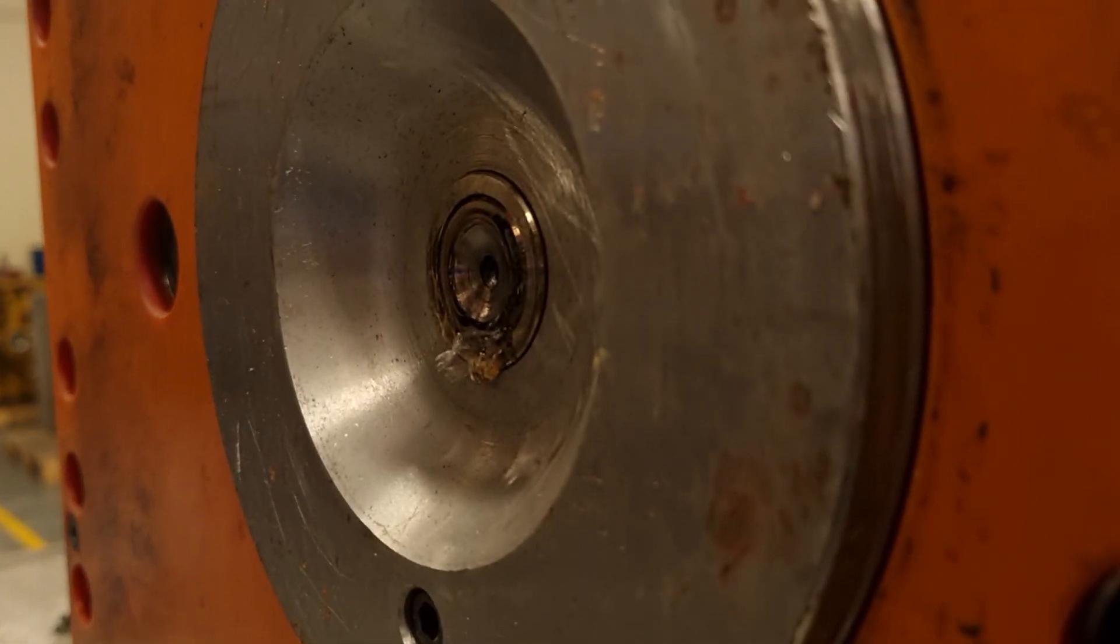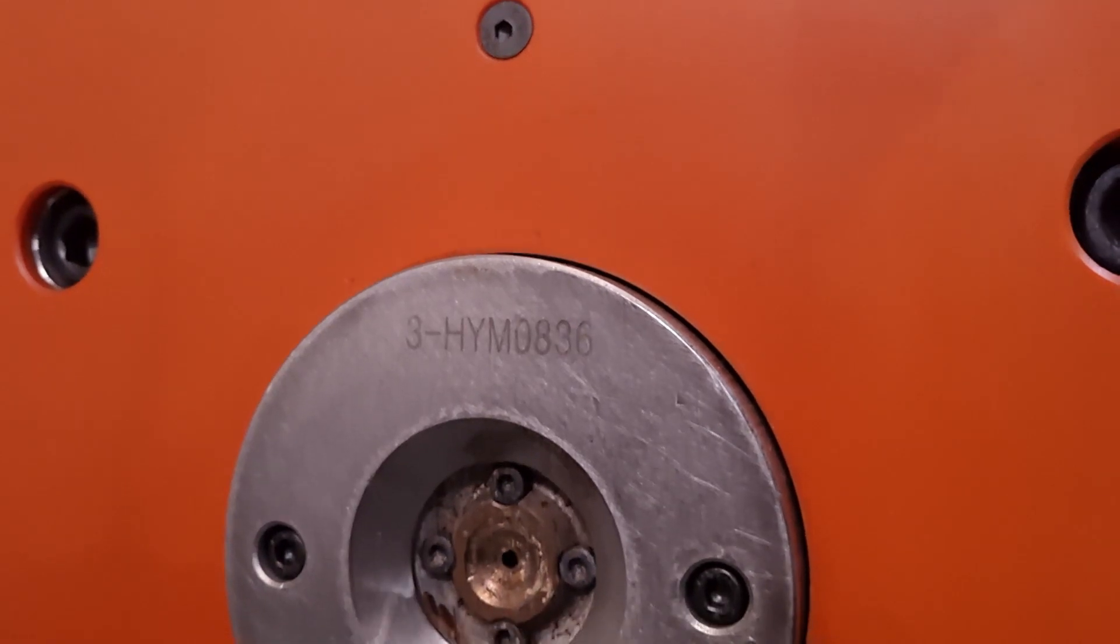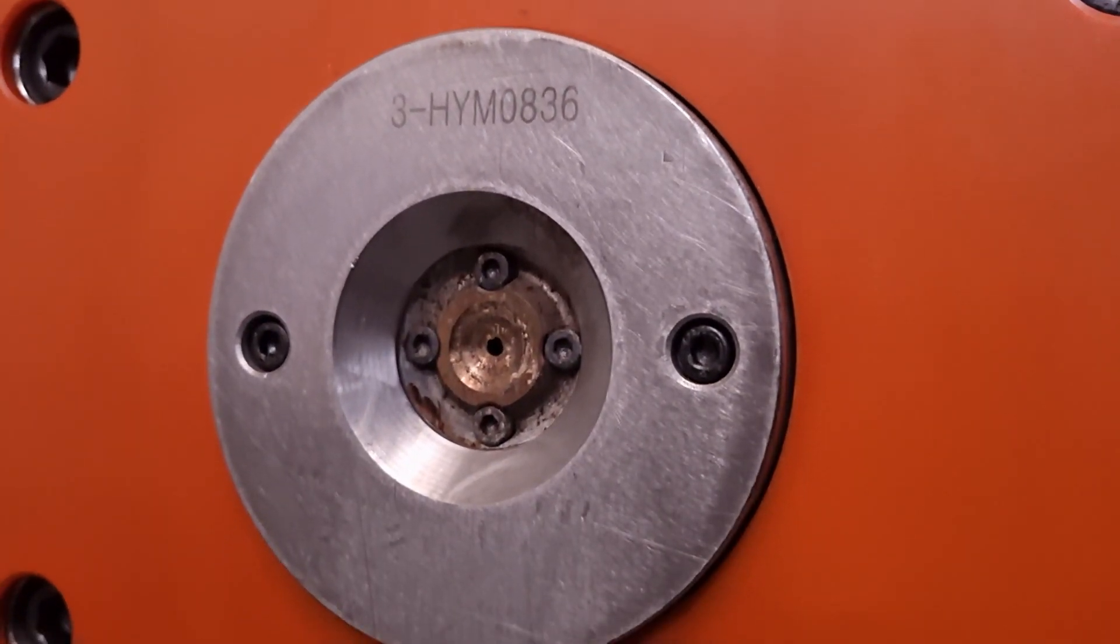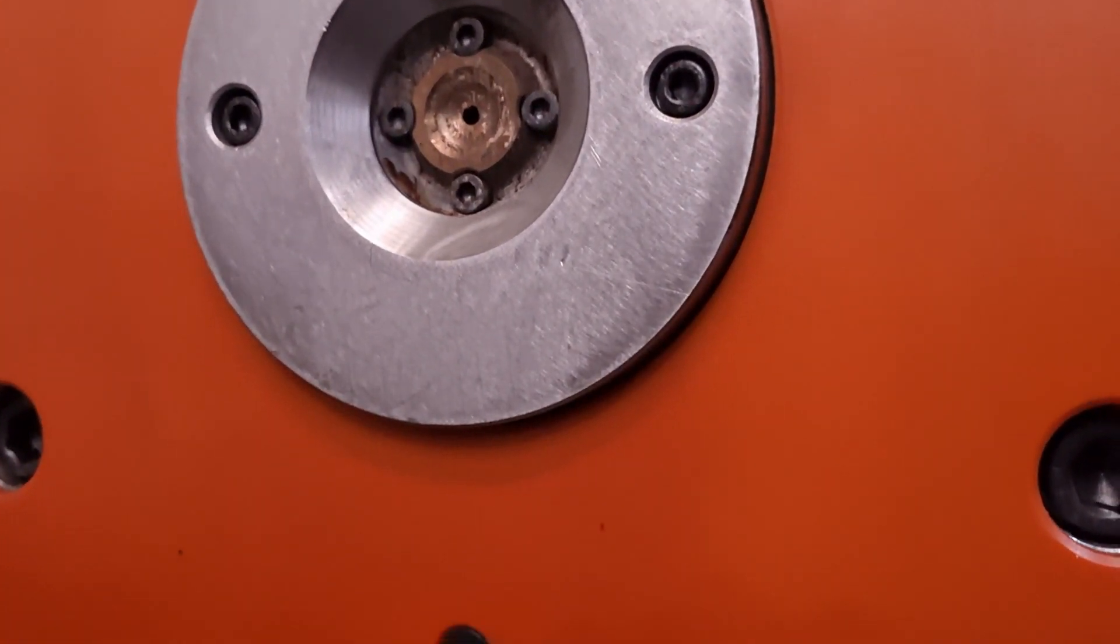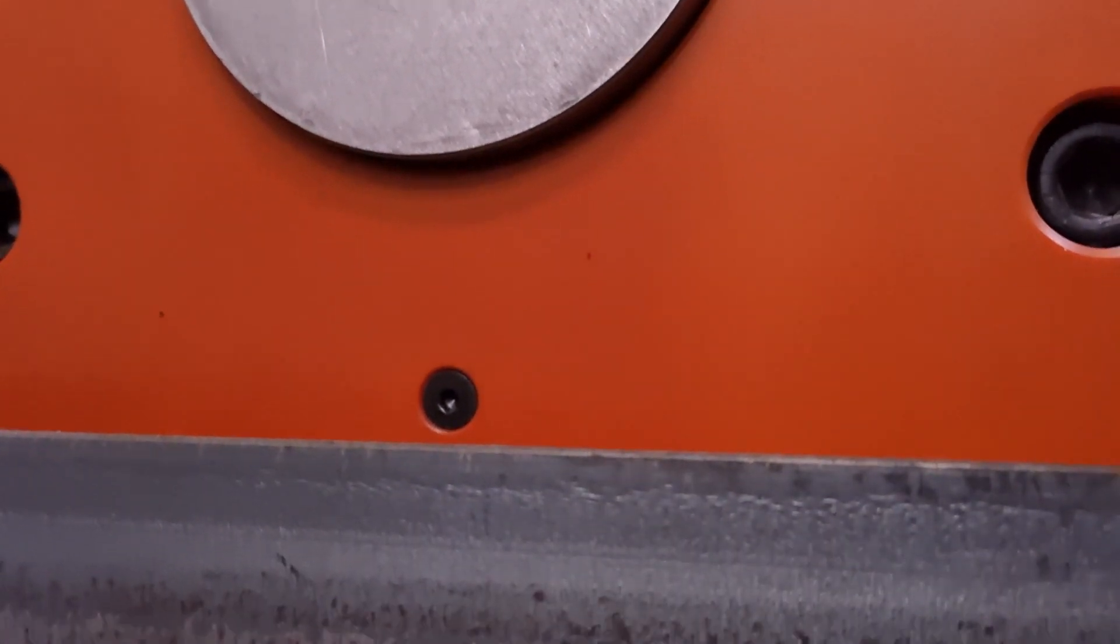Last but not least is the locating ring. This is located on the fixed half of the tool where the barrel meets the back of the tool. It ensures correct alignment between the tool and the machine.